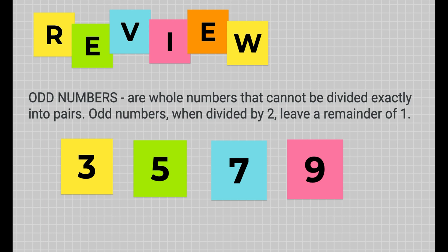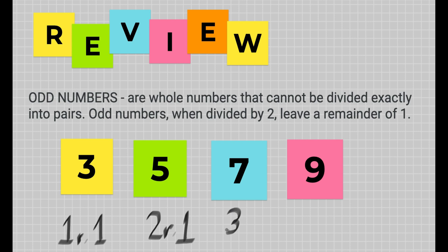Odd numbers are whole numbers that cannot be divided exactly into pairs. Odd numbers when divided by 2 leave a remainder of 1. Examples: 3, 5, 7, and 9 are all odd numbers. When you divide 3 by 2 that gives you 1 remainder 1; 5 divided by 2 gives you 2 remainder 1; 7 divided by 2 gives you 3 remainder 1; and 9 divided by 2 gives you 4 remainder 1.